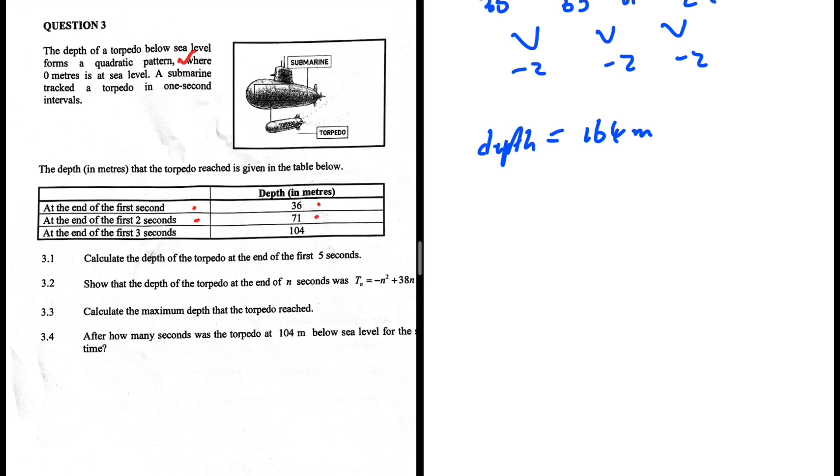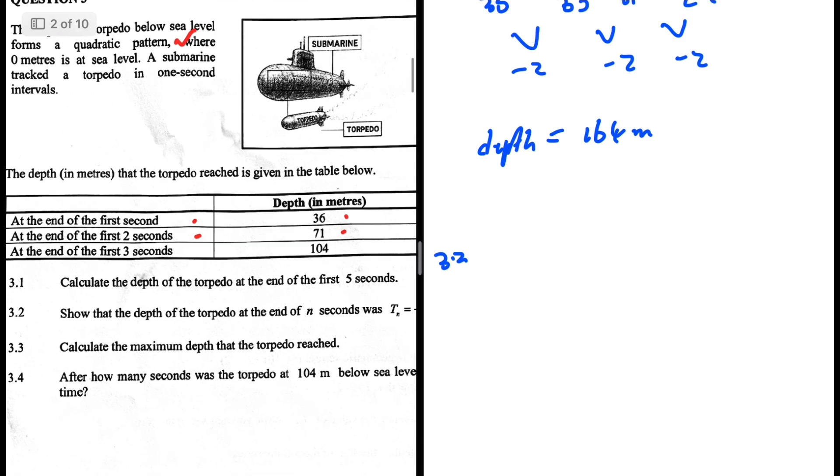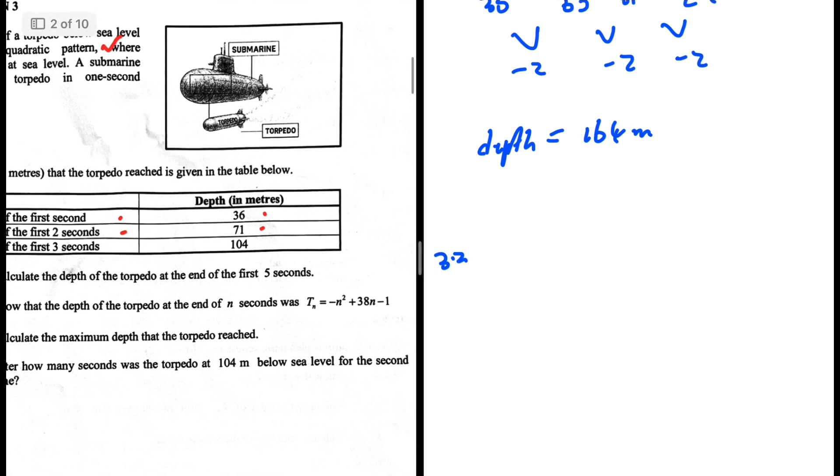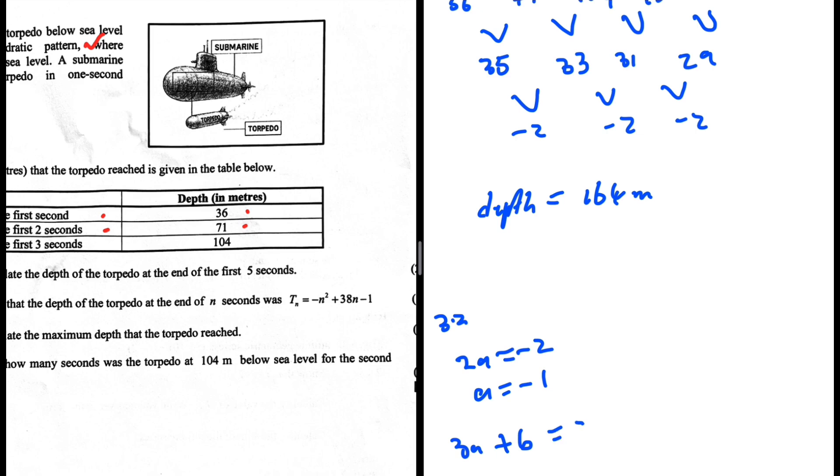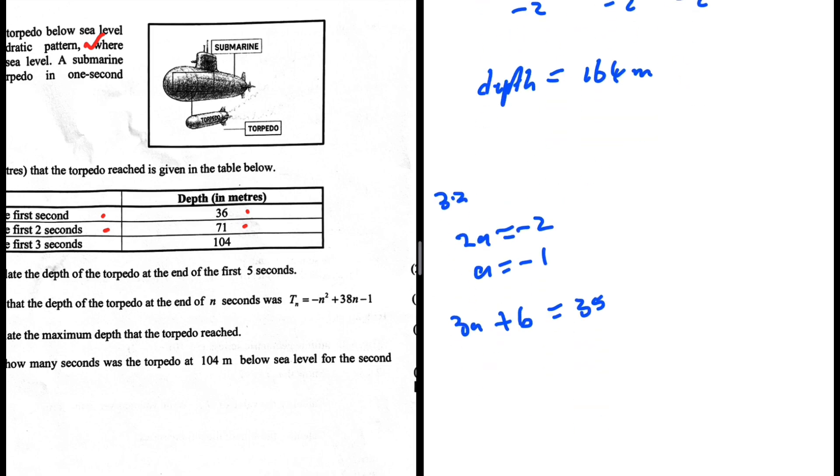3.2: Show that the depth of the object at the end of n seconds was Tn equals minus n squared plus 38n minus 1. Because we know it is a quadratic pattern, we can see 2a equals the second difference which is minus 2, so a equals minus 1. Then 3a plus b equals T2 minus T1, which is 35. So minus 3 plus b equals 35, meaning b equals 38.